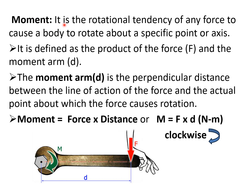Moment is the rotational tendency of a force to cause the body to rotate about a specific point or axis. It is defined by the product of the force and the moment arm. The moment arm is the perpendicular distance between the line of action of the force and the actual point. You see this diagram — this is the nut and this is the spanner. We apply force F here, and this is the point about which the nut will rotate. The moment created is force into the moment arm, that is F into D, and it is clockwise in nature.